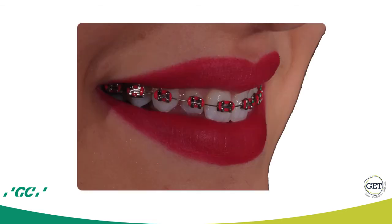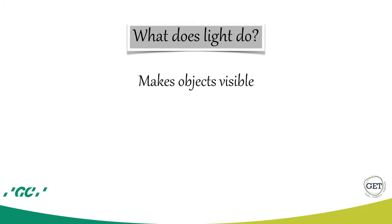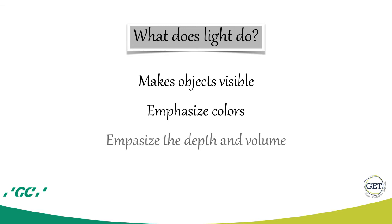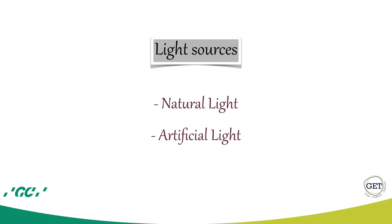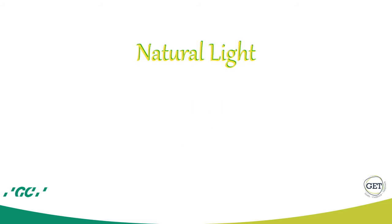Lighting is the most important component of photography — without light, we cannot take a photograph. Light makes objects visible, emphasizes colors, emphasizes depth and volume, and highlights details. There are two kinds of light sources: natural light and artificial light. In dental photography, we do not use natural light, because the color of natural light changes according to the time and weather conditions of the day, and sunlight cannot illuminate a patient's mouth.